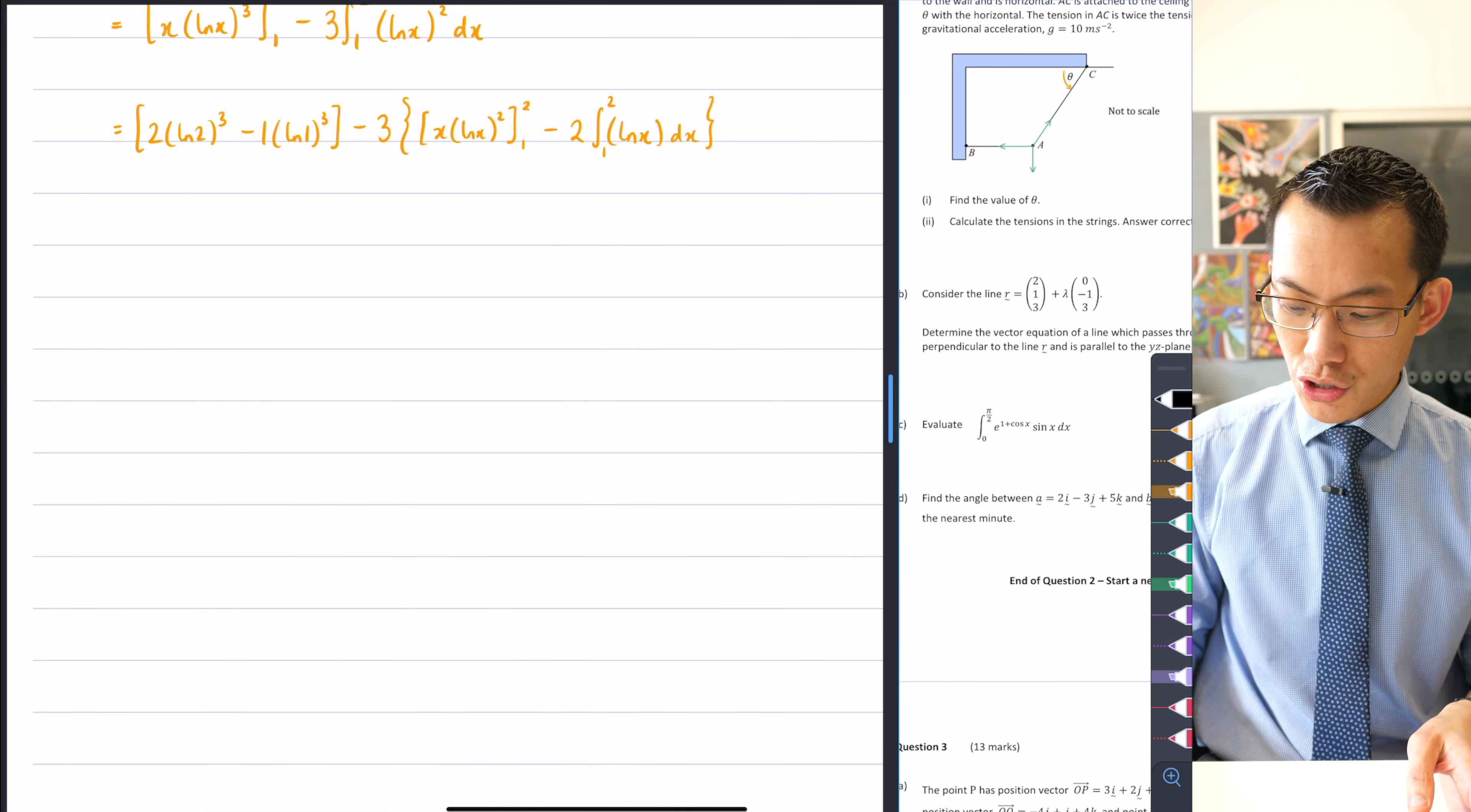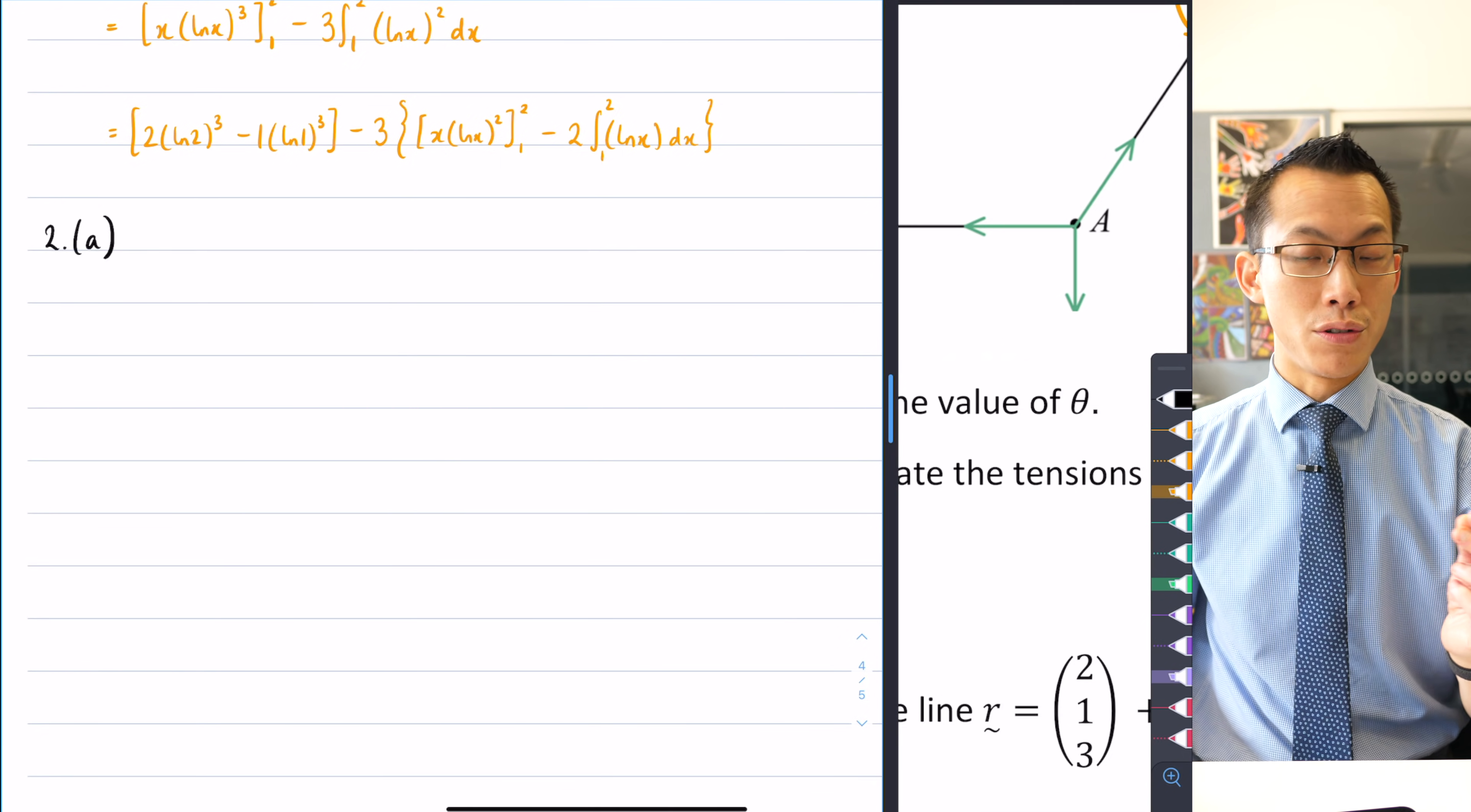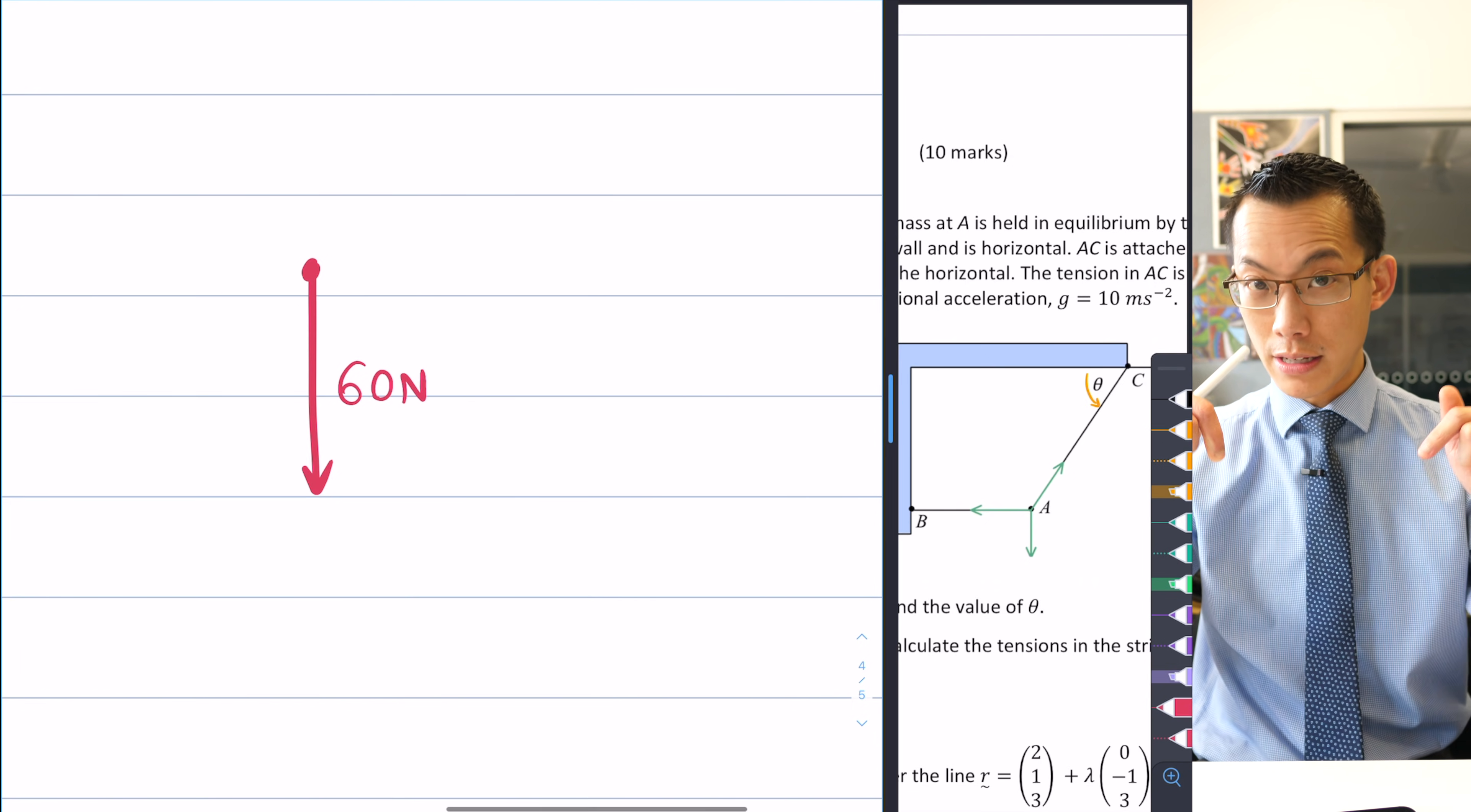So this is question two and we're in part A. When we have a look at this diagram, there are these three things pulling in different directions, but I want to take each of them and make sure I resolve their forces. The easiest force to look at is the gravitational force. The question says it's a six kilogram mass and gravity is 10 meters per second squared, so in terms of newtons, that's six times 10, which gives me 60 newtons going in the downward direction.